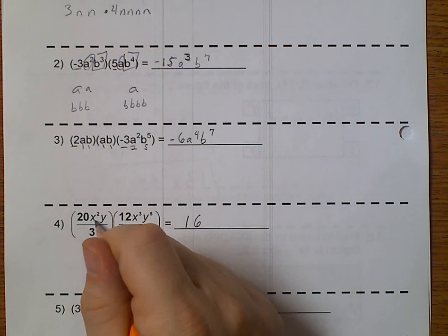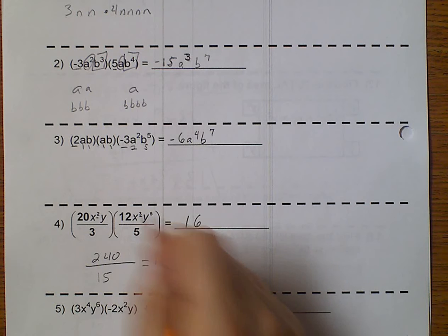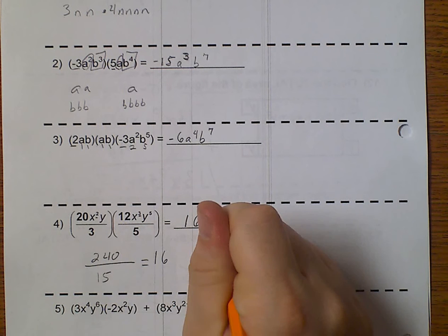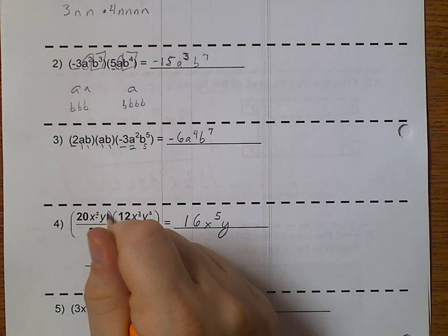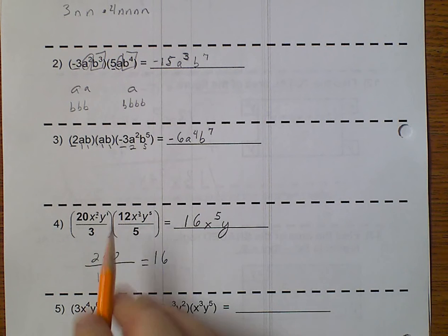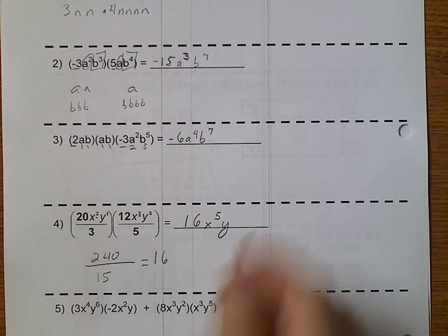And now, I have x to the 2, x to the 3. I add those and get x to the 5th. And now, y. Well, this is a y to the 1st because there was nothing there. So, 5 plus 1 makes 6.